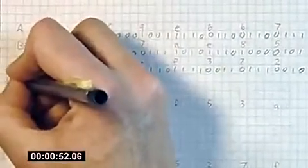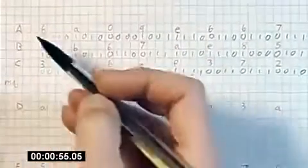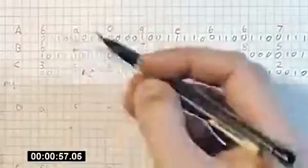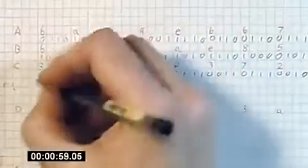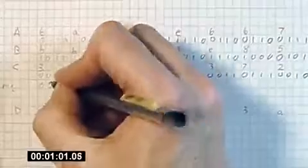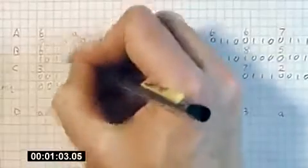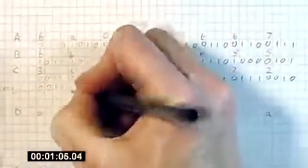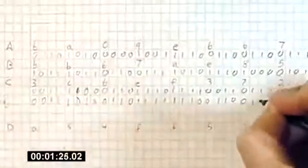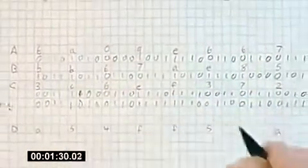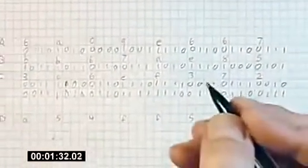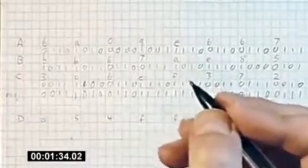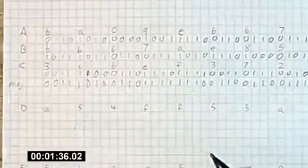Now for the first operation, we're going to compute the majority function on A, B, and C. What that means is simply we look at each of the three bits and see are there more 0s or 1s. 0, 1, 0, there's more 0s. 1, 0, 0, more 0s. 1, 1, 1, 1s win. 0, 1, 1, 1s win. And what this does is it mixes up A, B, and C in a nonlinear way, which makes it harder to break the hash function.